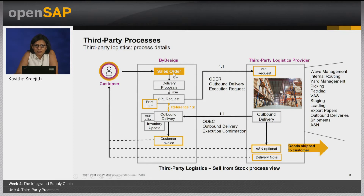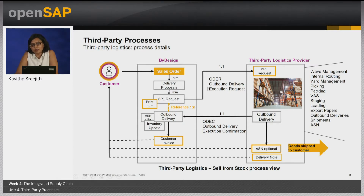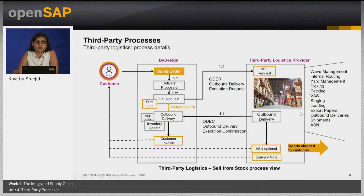In the sell-from-stock scenario with 3PL, a sales order is created in the system with the ship-from location as the 3PL site. After ATP check and release from customer demand, this creates an outbound delivery proposal. The outbound delivery proposal release creates a 3PL request, which can be configured to send a message to the 3PL provider indicating that a sales order needs to be shipped out. Focus and execution then shifts to the third party provider side, outside the Business by Design system. After physical execution of the shipment is completed at the warehouse, a message communication back to Business by Design creates the outbound delivery document.